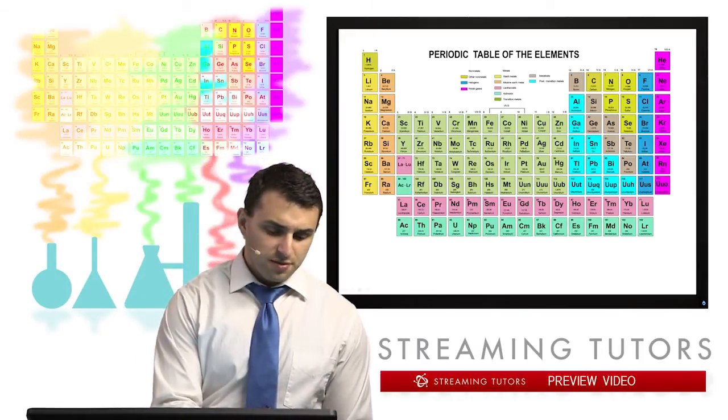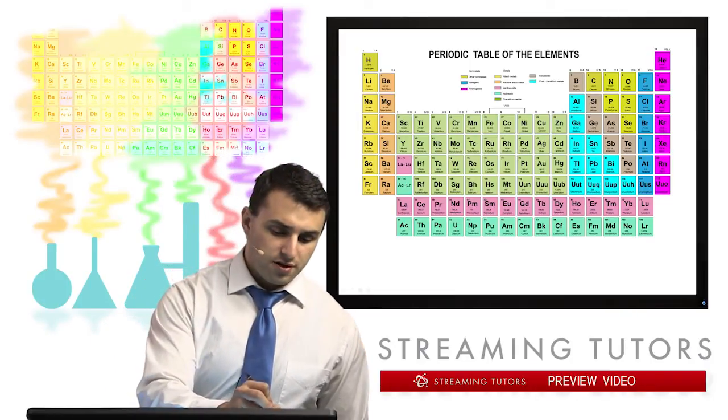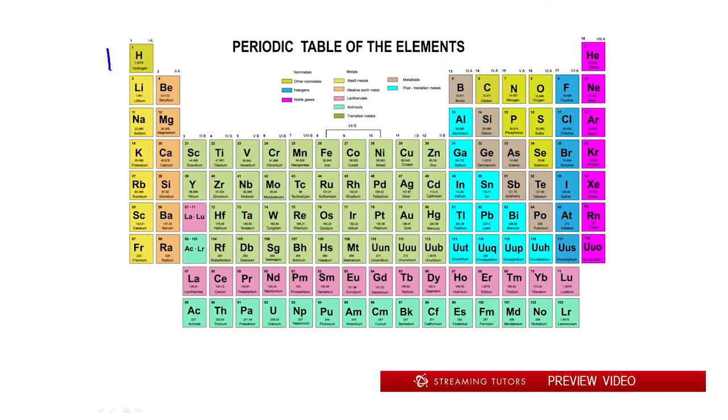So if we take a look at the periodic table, what we can do is let's say we're starting at period one over here. So hydrogen is going to have 1s1. On the right side, we're going to have 1s2. And now s orbitals can only have two electrons, so that's a filled s orbital. So let me go to the next one.